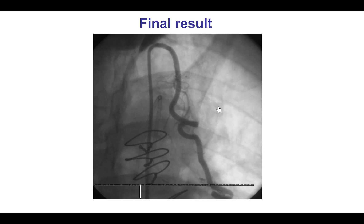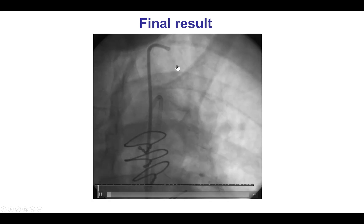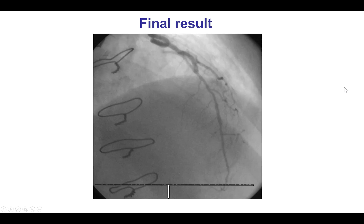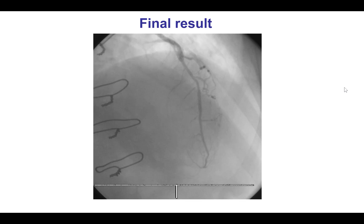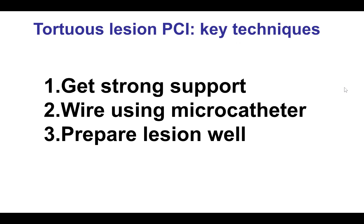When there is cessation of flow going down tortuous vessels such as LIMA grafts, one may have to abandon that route and find alternative ways to revascularize the distal target. In summary, there are three key techniques for treating tortuous lesions: get strong support during and before the procedure; wire using a microcatheter for better wire handling and to allow wire exchange; and prepare the lesion very well, using low-profile, highly deliverable stents.